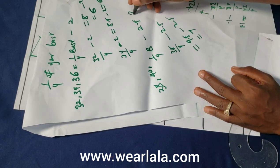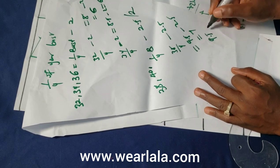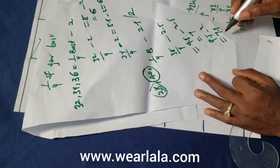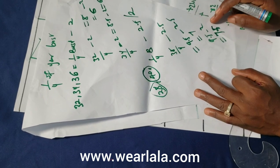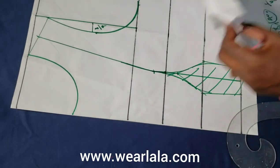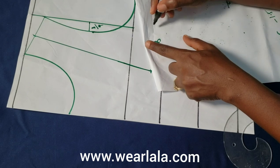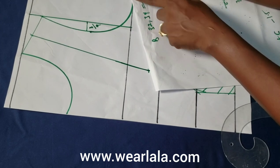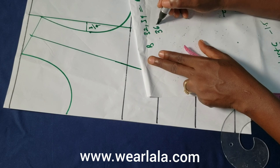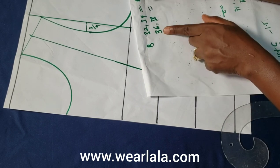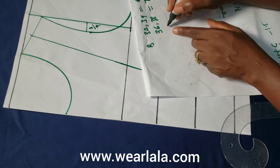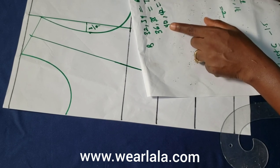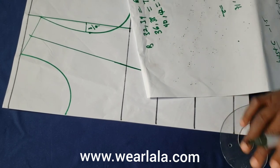If the bust is 38, quarter of 38 is 9.5. Minus 2 gives an across back of 7.5; minus 2.5 gives 7. It depends on shoulder width. So: for bust 32 to 34, across back is around 6 to 6.5; for bust 36 to 38, across back is around 7 to 7.5; for bust 40 to 42, across back is usually around 7.5 to 8 — though some people do have broader shoulders.